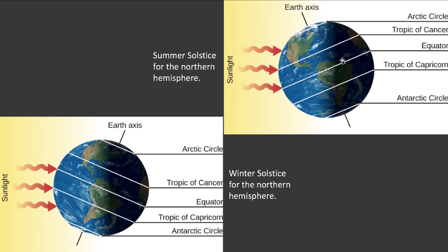During the winter solstice everything flips: the northern summer becomes the southern summer, the Antarctic circle has perpetual day, the Arctic circle has perpetual night, and the Tropic of Capricorn has the sun at its zenith. What we call the summer solstice is the summer solstice for the northern hemisphere and the winter solstice for the southern hemisphere, and vice versa.